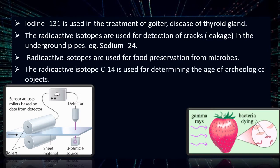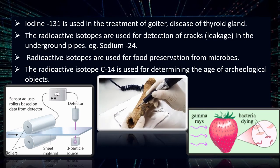Radioactive isotopes such as C-14 are used to determine the age of archaeological objects. We have studied in history about ancient civilizations of India like the Harappan civilization. The objects found are tested using C-14 to determine how old they are.